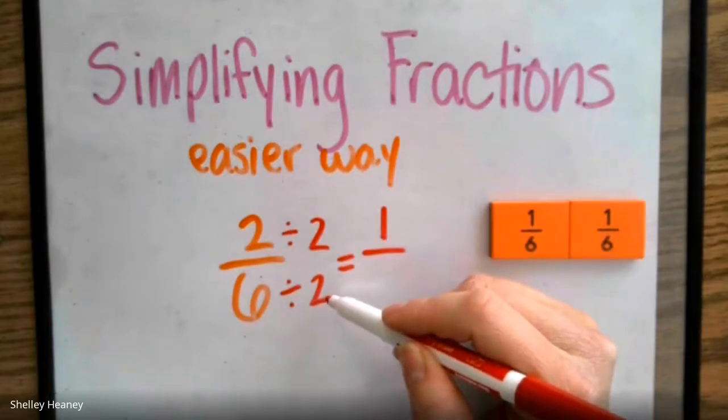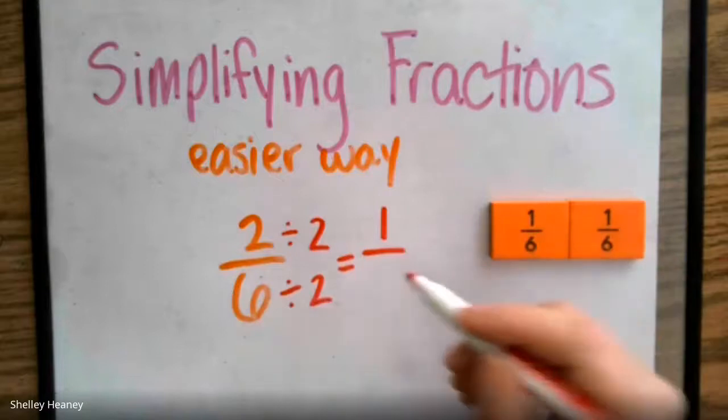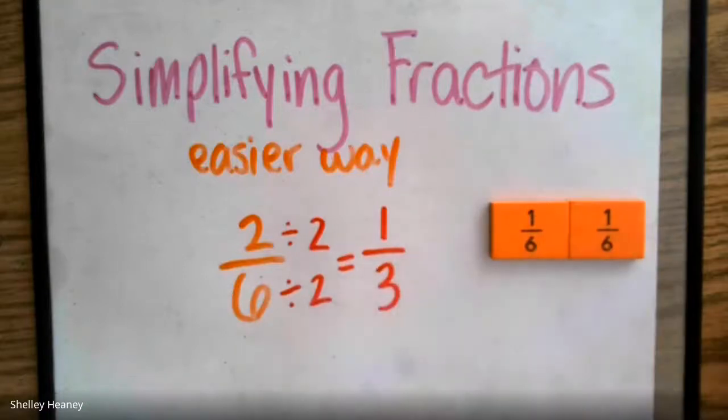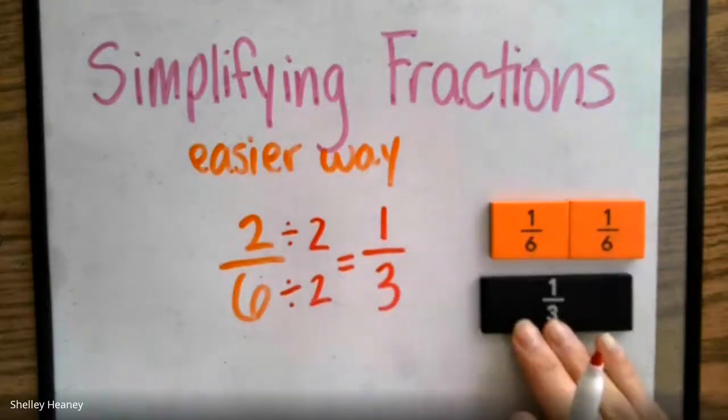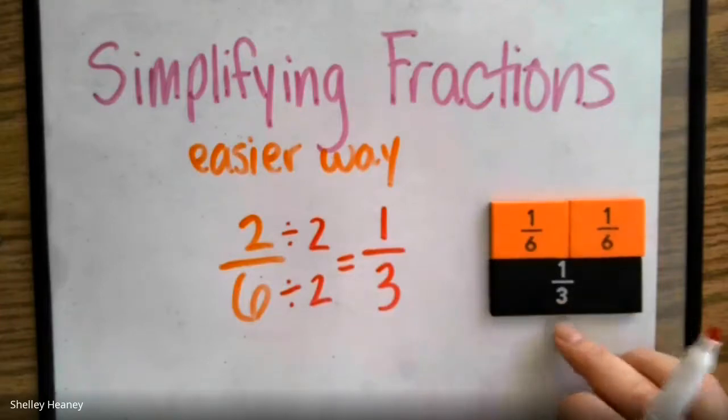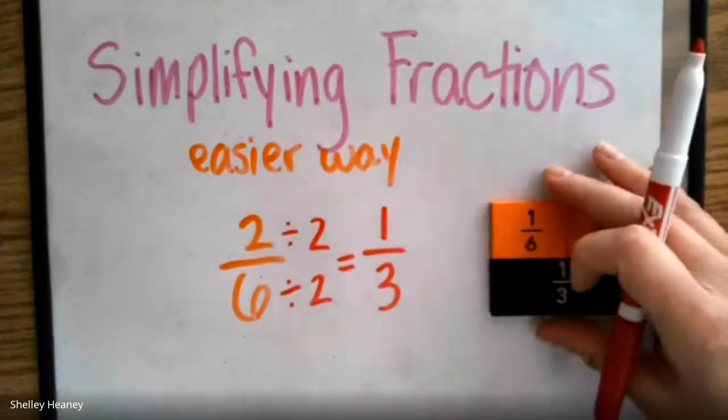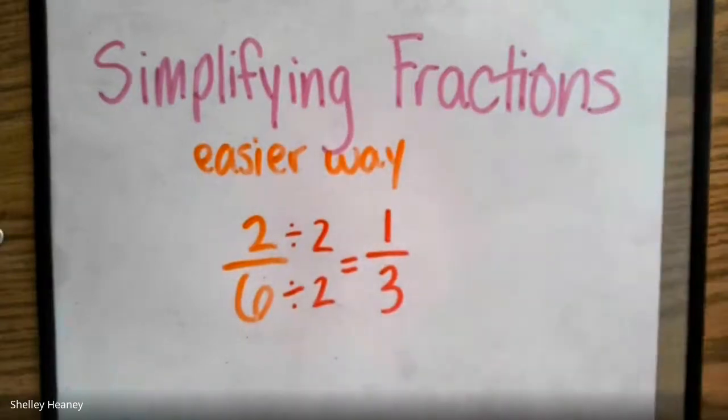Remember, if we're struggling with our division problems, what times 2 will give us 6? That number is 3. That means that one-third is equivalent or equal to 2 sixths. And one-third is a simpler or easier way of saying 2 sixths. They are the same.